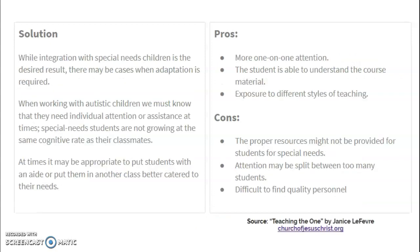Another solution is that while integration with special needs children is the desired result, there may be cases when adaptation is required. When working with autistic children, we must know that they need individual attention or assistance at times. Special needs students are not growing at the same cognitive rate as their classmates. At times, it may be appropriate to put the student with an aide or to put them in another class better catered to their needs. Doing this will allow them more one-on-one time with teachers, help them understand course material, and give them exposure to different styles of teaching. The cons are that proper resources might not be provided, attention may be split between too many students, and it can be difficult to find quality personnel.